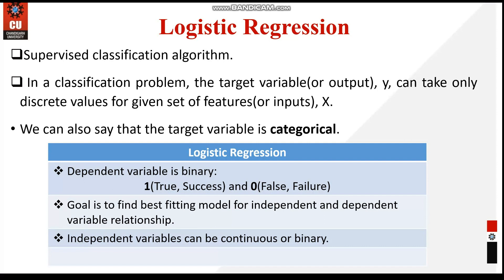Logistic regression basically deals with binary variables. It is very useful when we have to do certain decision making, like detecting whether an email is spam or not, true or false, zero or one, success or failure. In all such cases we have a binary dependent variable, and the goal is to find the relationship between variables — independent variables can be continuous or binary.